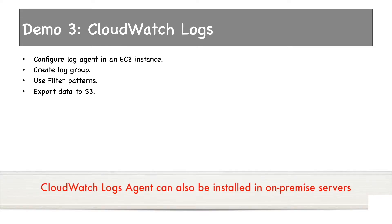It's demo time now. We'll configure the CloudWatch log agent in an EC2 instance. We'll create a log group and we'll use filter patterns. Then we'll export the data to S3.